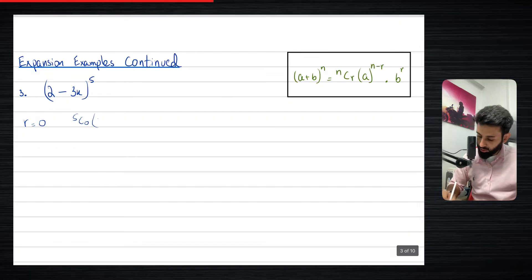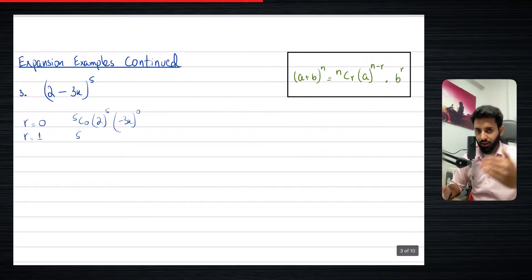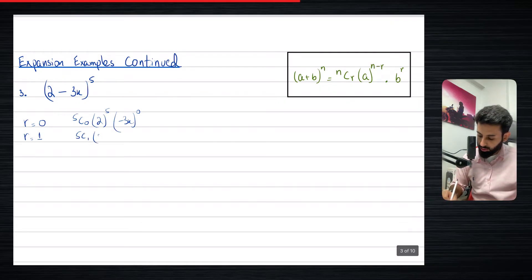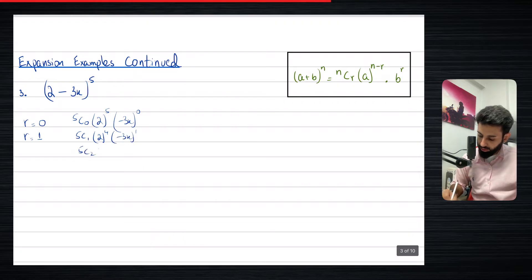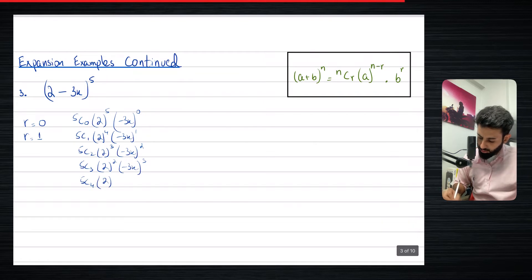So 5C0 for the first term: two to the power of five minus zero, which is five, and minus three x to the power zero. Then for r equals one: 5C1, two to the power four, minus three x to the power one. Then 5C2, two to the power three, minus three x to the power two. Then 5C3, two to the power two, minus three x to the power three. Then 5C4, two to the power one, minus three x to the power four. And finally 5C5, two to the power zero, minus three x to the power five.